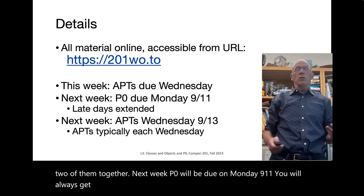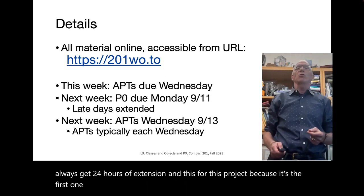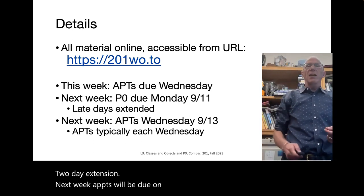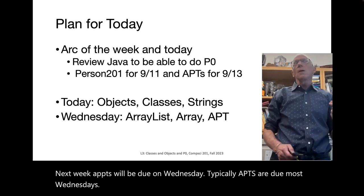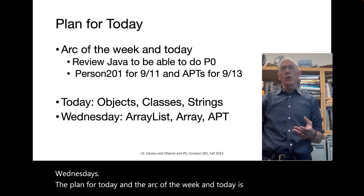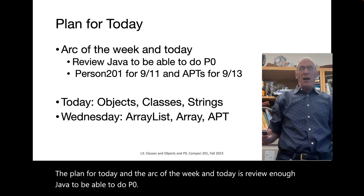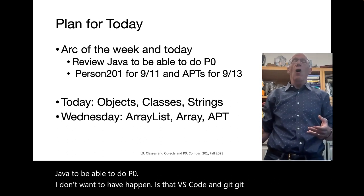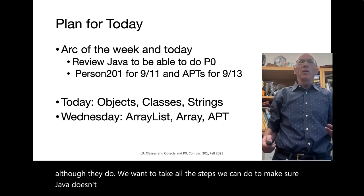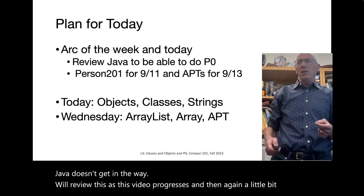You will always get 24 hours of extension, and for this project, because it's the first one, you'll get an extra two-day extension. Next week, APTs will be due on Wednesday. Typically, APTs are due most Wednesdays. The plan for today is to review enough Java to be able to do P0. What I don't want is for VS Code and Git to get in the way, so we want to take all the steps we can to make sure Java doesn't get in the way either.